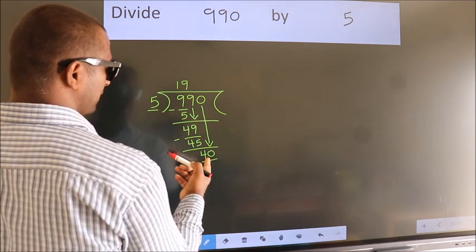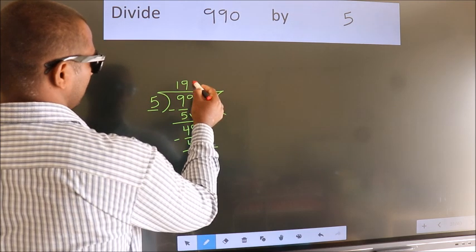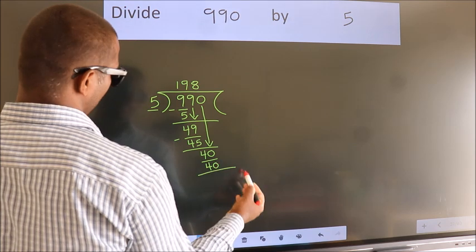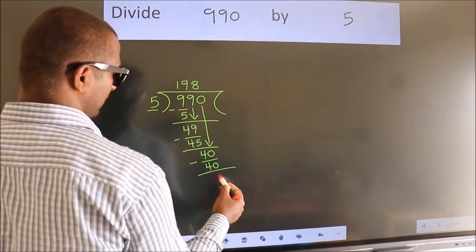When do we get 40? In 5 table. 5 8s, 40. Now we subtract. We get 0.